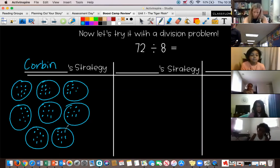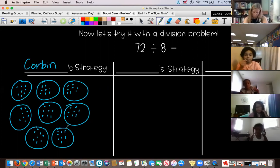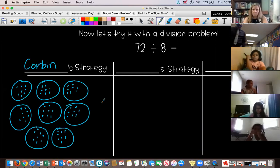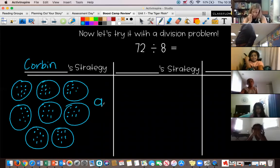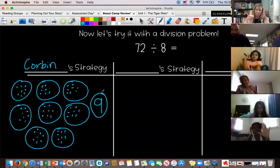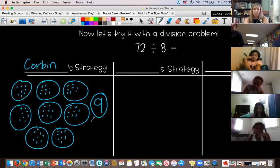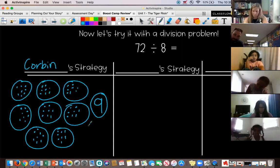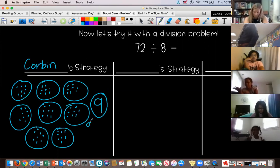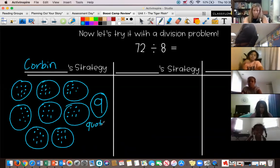Bonus points for somebody not named Corbin. Who can tell us what that answer of nine is called? Michael. The total. Not the total. What's the answer to the division problem called? Kyrie. Ania. The product. Oh, you're so close. That's multiplication. Quotient. Quotient. That's right. It's a quotient, right? Quotient. So our quotient in that problem was nine.